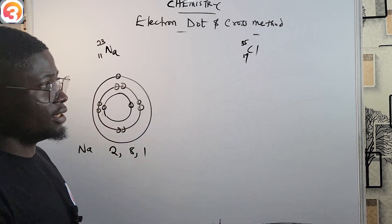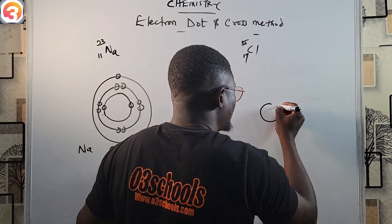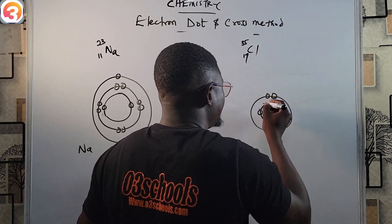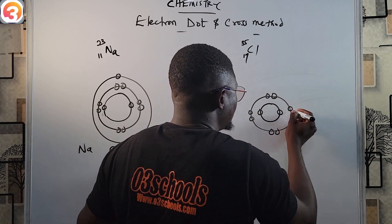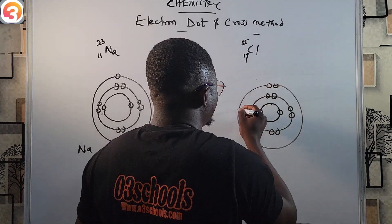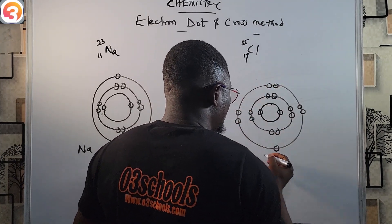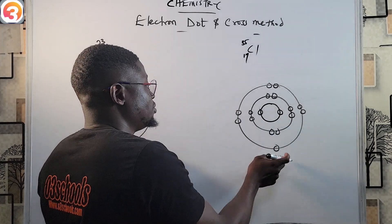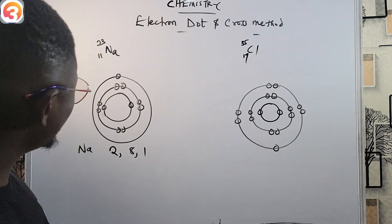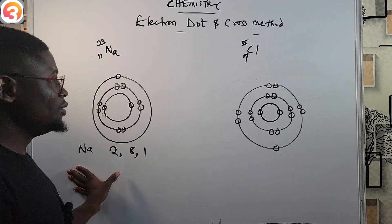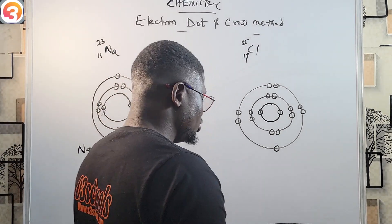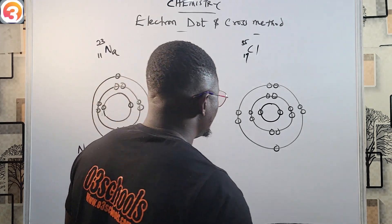So sodium is 2, 8, 1 — the first ring has 2 electrons, the next ring has 8 electrons, and the last ring has just 1 electron. For chlorine, we do the same: 2 electrons in the first shell, 8 electrons in the next shell, then the last ring containing 7 electrons. So chlorine is 2, 8, 7. It does not matter whether you represent the electrons as dots or crosses.